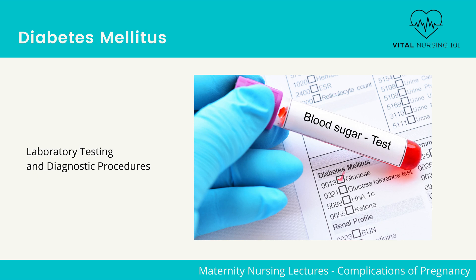A positive blood glucose will require additional testing with a 3-hour glucose tolerance test, which includes an overnight fast. It is important to teach the client to avoid caffeine and smoking for a 12-hour period prior to testing. A fasting glucose is obtained with 1, 2, and 3-hour readings following glucose ingestion.